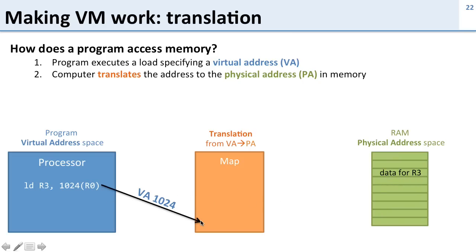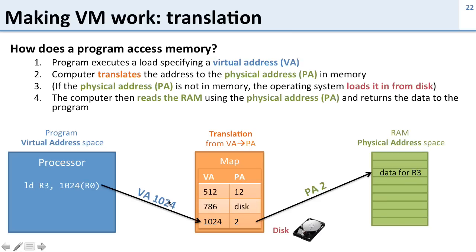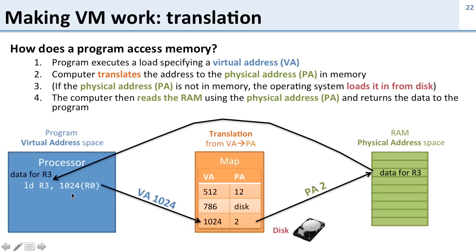We tell the translation map we want virtual address 1024. It looks it up and says virtual address 1024 maps to physical address 2. So it goes to physical address 2 and gets the data. Now, if the data is not in memory, it goes and loads it from disk. In this case it is in memory, so we take this data and return it. We took virtual address 1024, translated it to physical address 2, and sent the data back.